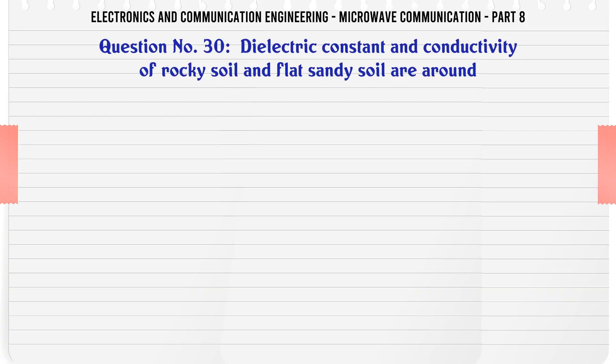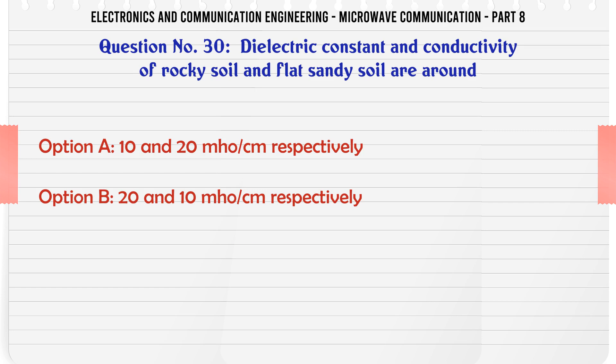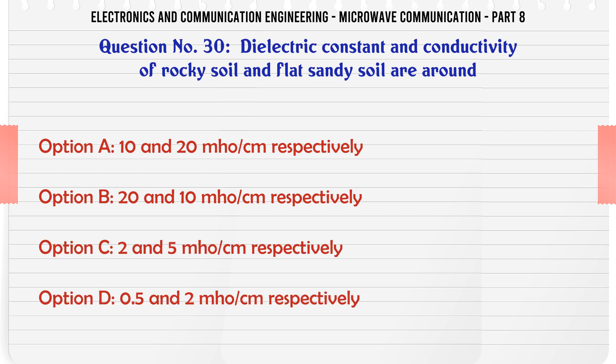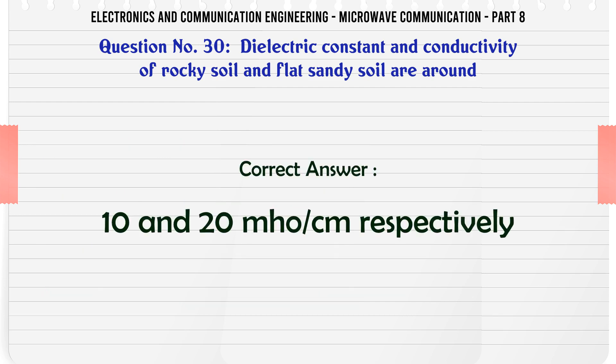Dielectric constant and conductivity of rocky soil and flat sandy soil are around — A. 10 and 20 mho/cm respectively, B. 20 and 10 mho/cm respectively, C. 2 and 5 mho/cm respectively, D. 0.5 and 2 mho/cm respectively. The correct answer is 10 and 20 mho/cm respectively.